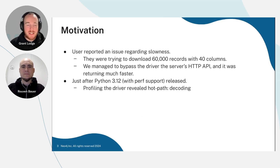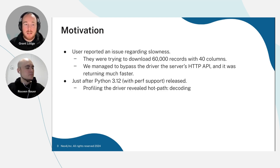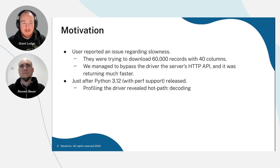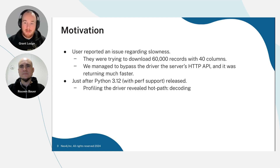Basically, a customer messaged us — the nice thing about Neo4j is we use Discord and you can reach out to us and talk to us there. We ended up having a 400 message dialogue with a user about a weird use case of having thousands of records, lots of columns, and they were complaining about the Python driver being really slow. Helping them, we managed to find that the HTTP API that the old Neo4j server uses was outperforming it — so alarm bells were ringing. Fortunately, Python 3.12 had released with Perth support, so I could go and profile this, and we found a nice hot path: the PackStream decoder.